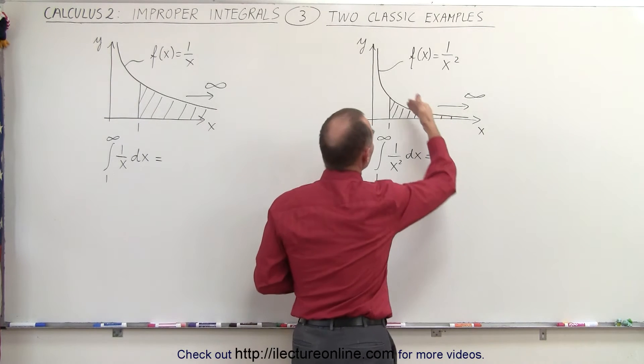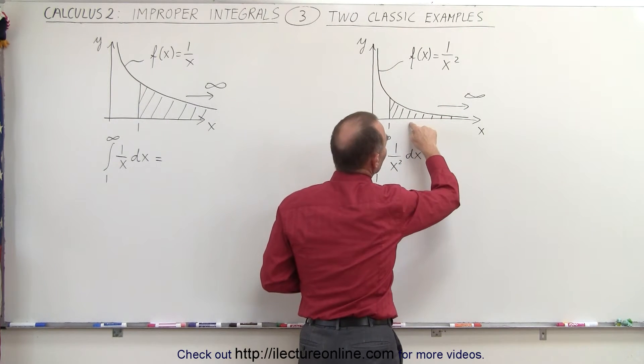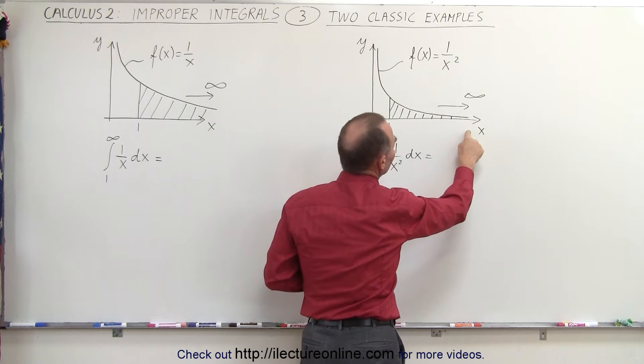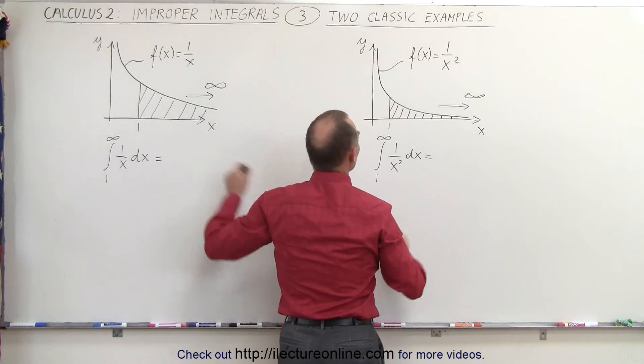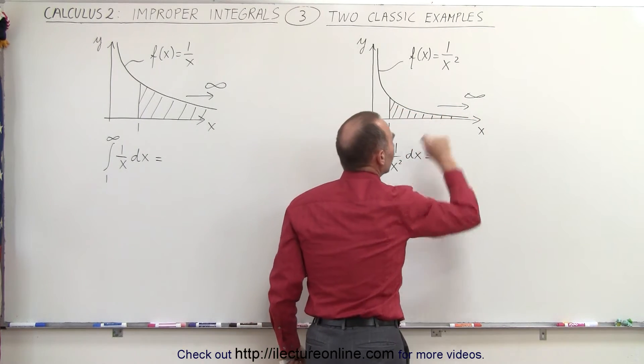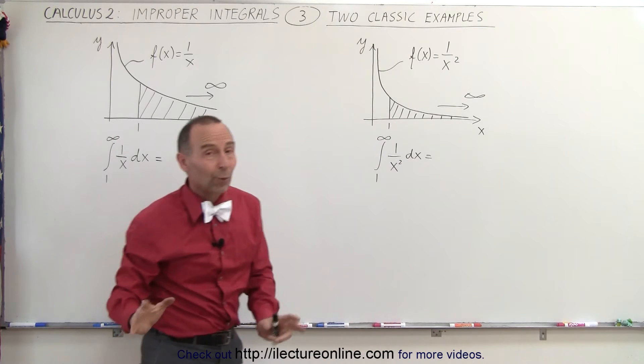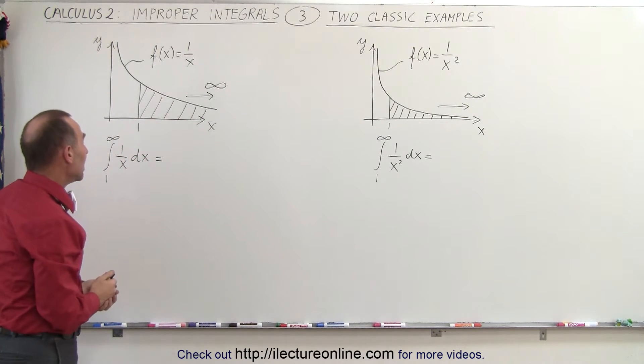Here you can see that 1 over x squared converges a lot more quickly, gets much more quickly close to the x-axis as you get in this function, so there's more of a chance that it will converge. But now let's go ahead and work out the two integrals to see if they do or not.